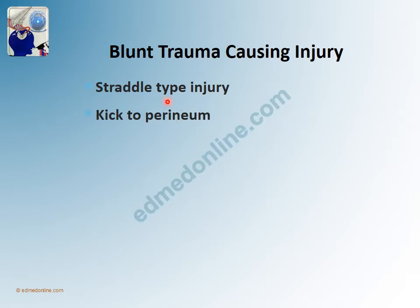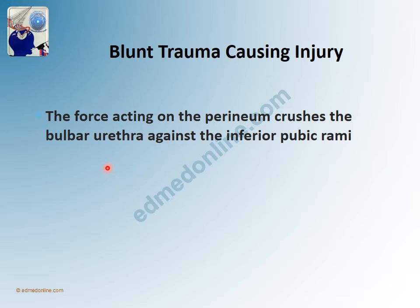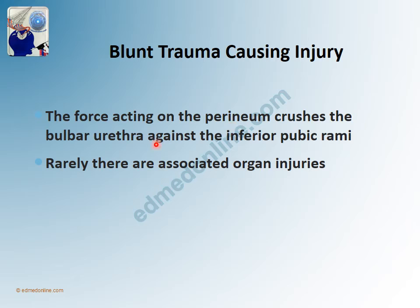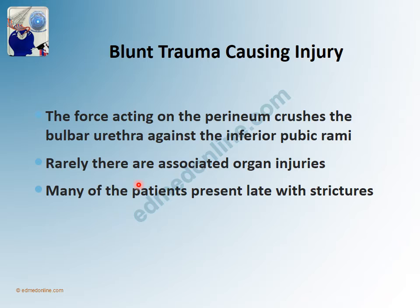The two types of injuries that can damage the bulbar urethra are a straddle-type injury or a kick to the perineum. The bulbar urethra is the fixed part, and whenever there is an external force affecting that area, it crushes the bulbar urethra against the inferior pubic rami. Because this is a localized area, there is very little chance that associated organs will be affected. Many of these patients in fact neglect this injury and present late with strictures.